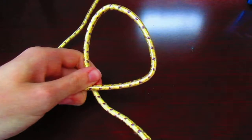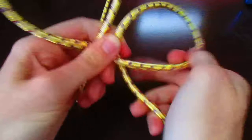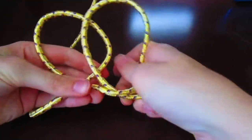First, make an underhand loop, then make a second one and put the second one on top of the first one. I'm going to denote this as one and two.